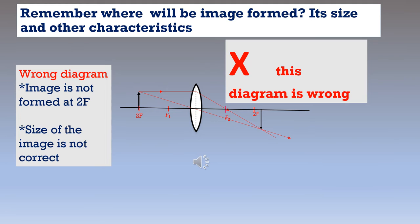For example, here a diagram is given where the object is placed at 2f. We should know where the image will be formed — if the object is at 2f, the image also will be at 2f. But see in this diagram, the image is not formed at 2f, so this is a wrong diagram. The image should be at 2f and the size of the image should be the same as the size of the object, but here both these points are not satisfied, so this diagram is wrong. We have to find out where we made the mistake and learn how to draw it correctly.